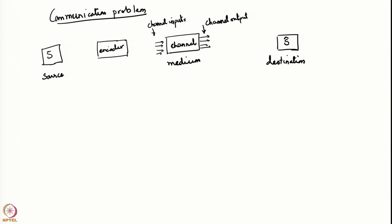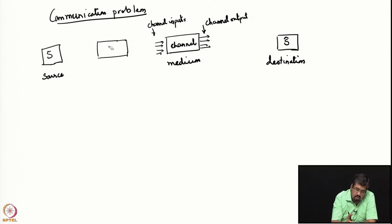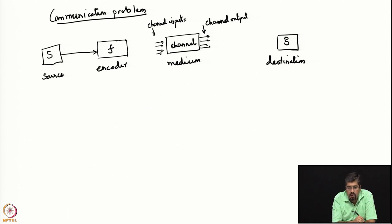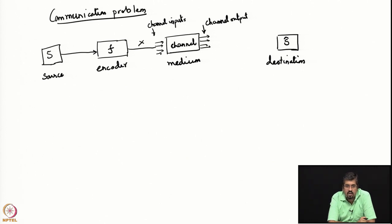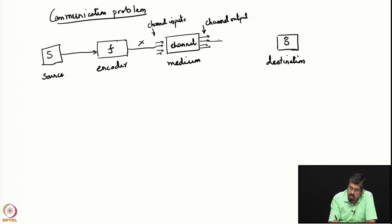What the encoder does is take the source random variable and map it to a possible channel input. Let us denote this encoder by a function f. So the source goes into the encoder; the encoder maps the source to a possible channel input, let us call that channel input x. Now the channel has a characteristic — the amount of noise that it adds to the channel inputs. When you send an input x, it produces a possible output y with a certain probability.